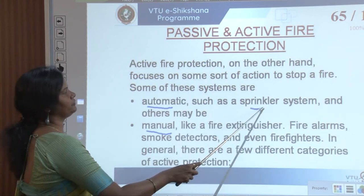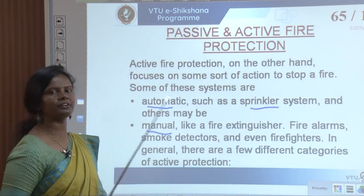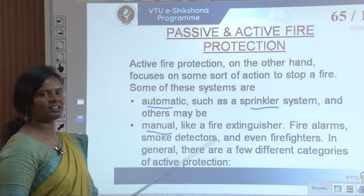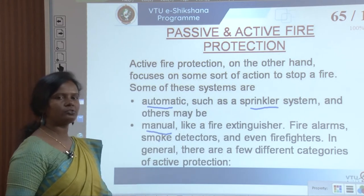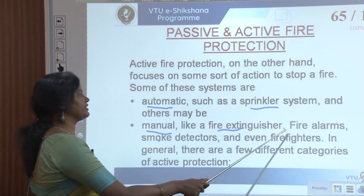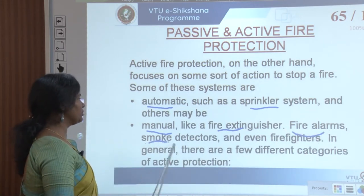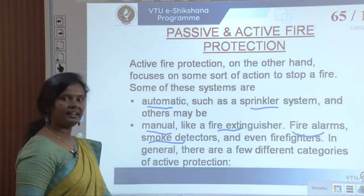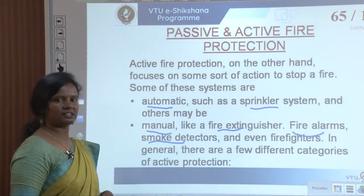Automatic systems include fire sprinkler units with heads installed throughout the building that stop the fire by release of water. Manual systems include fire extinguishers, fire alarms, smoke detectors, and firefighters. These are all active fire protection systems.